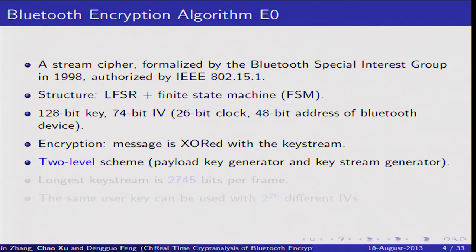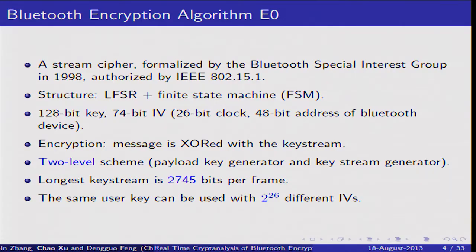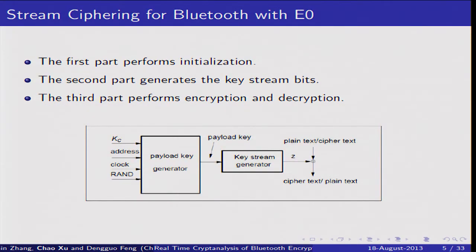Bluetooth has three important features that make it very hard to be broken in practice. First, E0 applies a two-level scheme. Second, the longest key stream is 2755 bits per frame. Third, the same user key can be used with up to 2^26 different IVs. This picture shows three parts of E0. The first part performs initialization. The second part generates the key stream base. The third part performs encryption and decryption, especially the key stream generation.